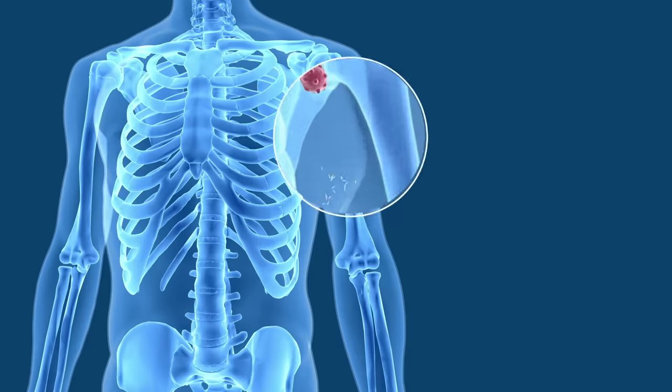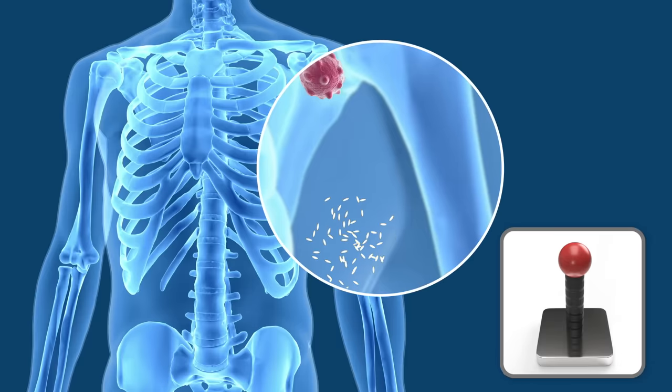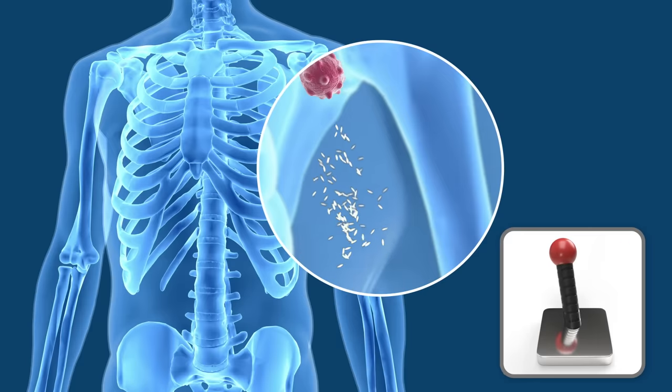These bacteria are self-propelled active swimmers. A guidance system directs the bacteria to the exact location of the tumor. The bacteria attack and destroy only the cancer. The surrounding healthy tissue remains unharmed.